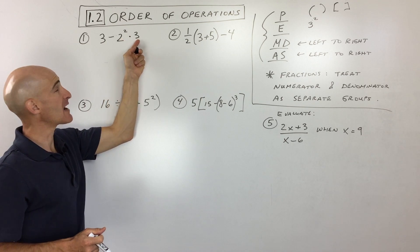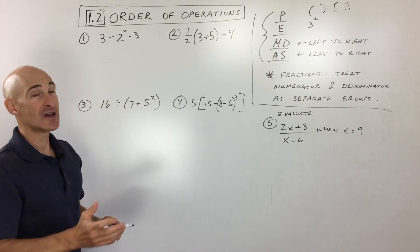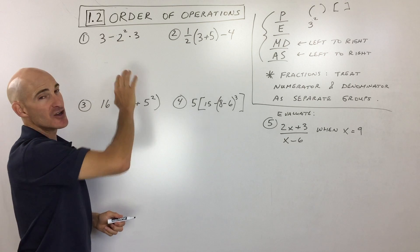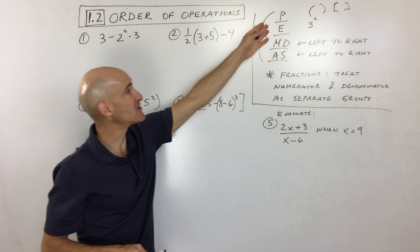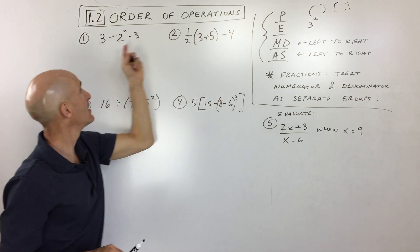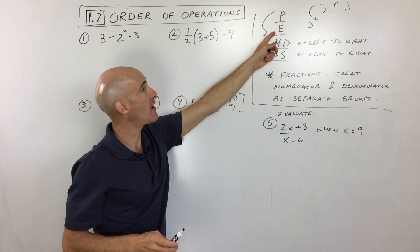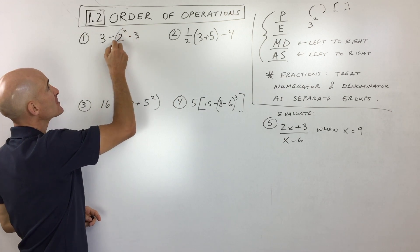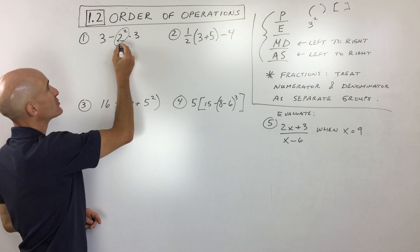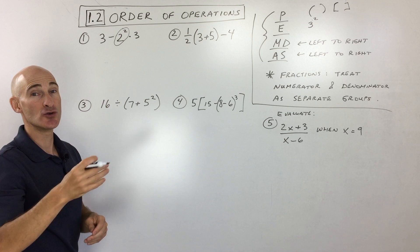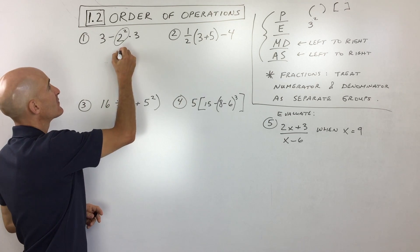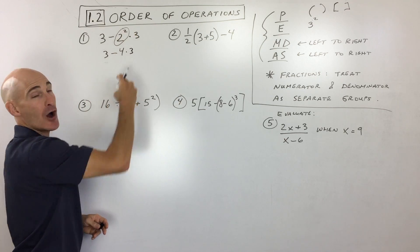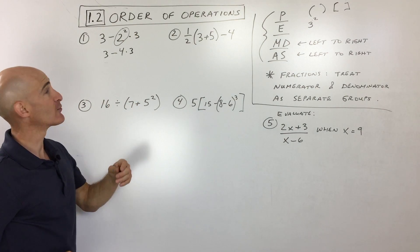So here we go. 3-2²·3. You don't want to just read left to right and do 3-2=1 and then 1². You want to think of your PEMDAS. Are there any parentheses? No, we got that checked off. How about exponents? Yes, right here. So I want to do this part first. 2² means 2·2, two twice. That gives us 4.